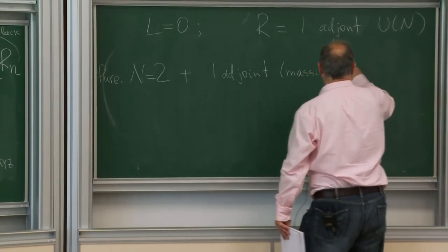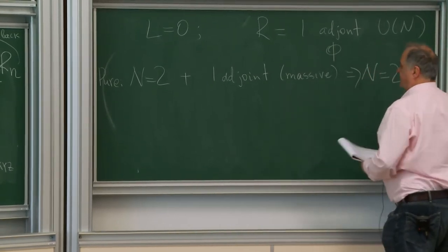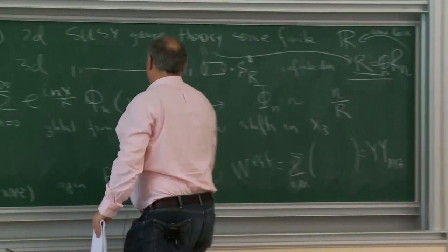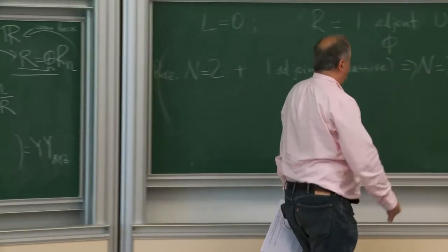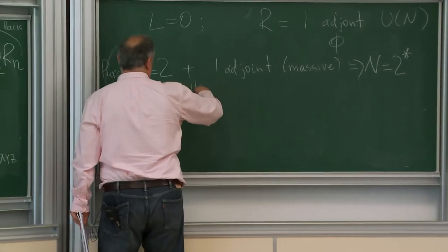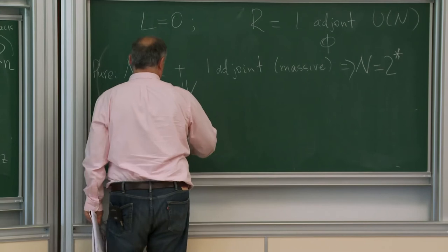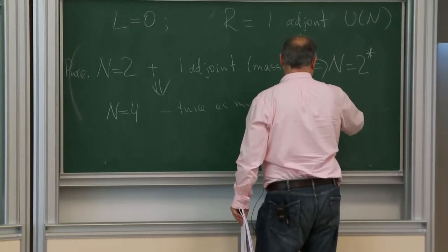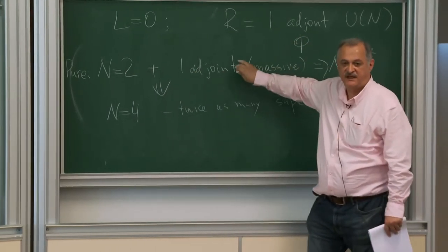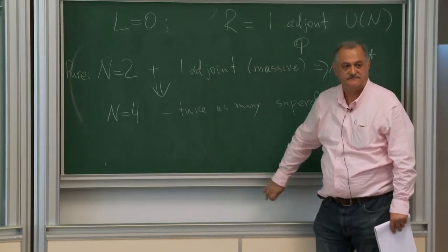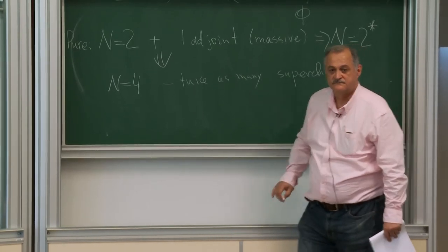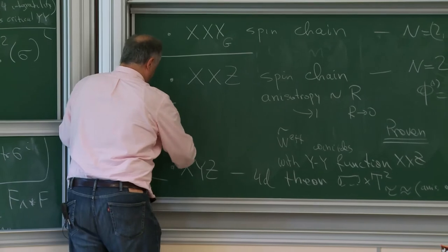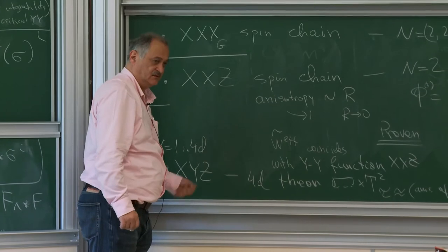Now I want to consider the simplest possible case when we have both topological quantum field description and some interesting Schrödinger operators. Let's go back to two dimensions and consider my old example — called the main example — except I will take L to be equal to zero, which means I consider just one adjoint representation of U(N), and I call that one adjoint phi. So now I have N=(2,2) in two dimensions — pure N=(2,2) which means just gauge multiplet — plus I add one adjoint and make it massive. This kind of theories are called N=2* theories: N=2 theories plus one adjoint massive multiplet.